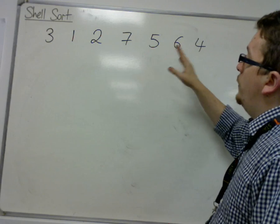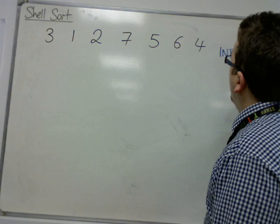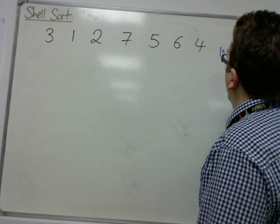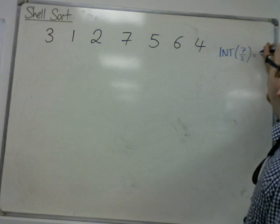3, 1, 2, 7, 5, 6, 4. So you've got 7 numbers and you want to find the integer part of 7 over 2. So 7 over 2 is 3.5, so the integer part is just the 3.